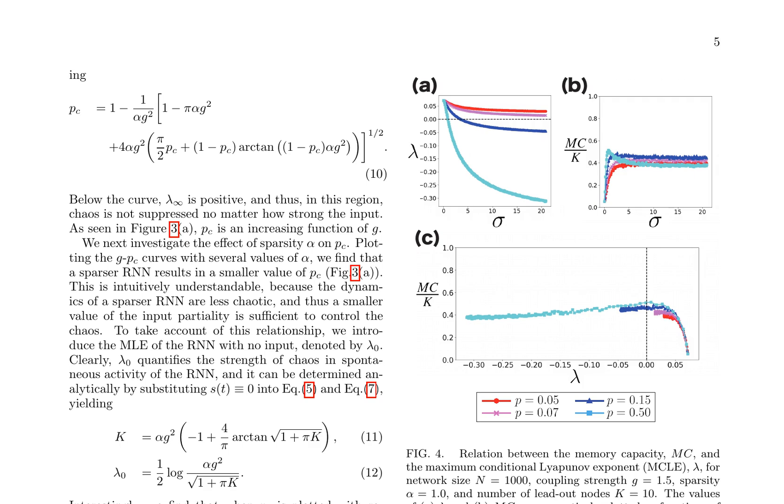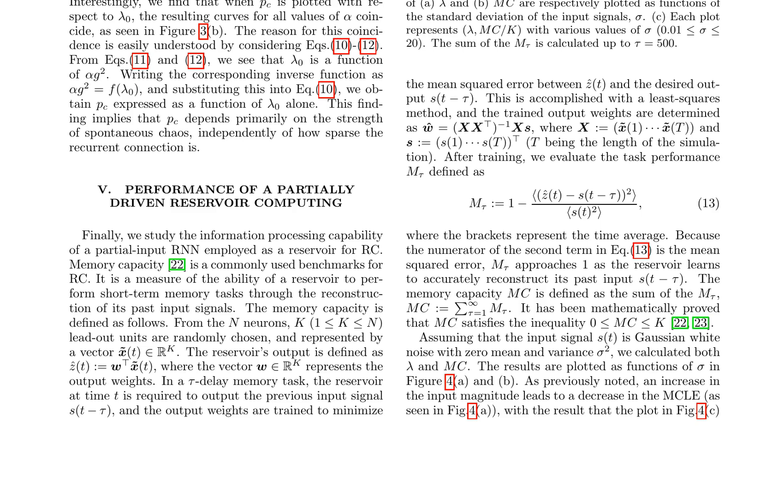The authors calculate both the maximum conditional Lyapunov exponent, MCLE, and MC as functions of the standard deviation of the input signals σ, for a network size of n = 1000, coupling strength g = 1.5, sparsity α = 1.0, and number of read-out nodes k = 10. The results show that an increase in the input magnitude leads to a decrease in the MCLE, corresponding to a decrease in chaos and an increase in memory capacity. The relationship between MCLE and MC is further explored, suggesting that memory capacity is primarily dependent on the strength of spontaneous chaos, as quantified by the MCLE, rather than the sparsity of recurrent connections. This implies that controlling chaos through partial driving is crucial for enhancing the information processing capabilities of reservoir computing models.